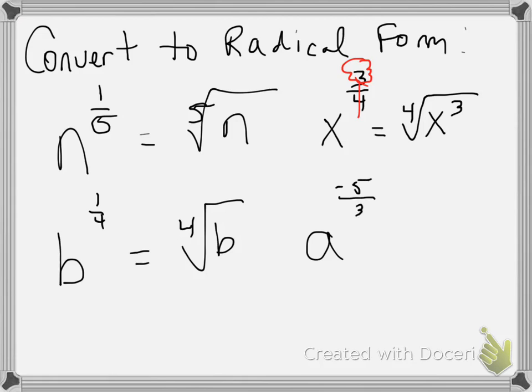a to the negative five over three. It works for negatives as well. So we get the cube root of a to the negative fifth. Because again, the flower is negative five, the root is three. The cube root of a to the negative five. Okay? Let's go the other way now. Let's convert to exponential form.